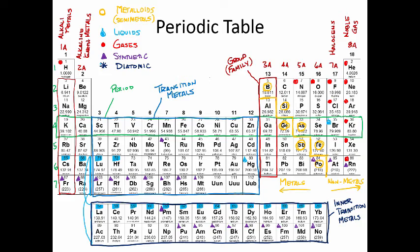The diatomic elements are nitrogen, oxygen, fluorine, chlorine, bromine, and iodine. The last diatomic element is our oddball, found on the other side of the periodic table, hydrogen.